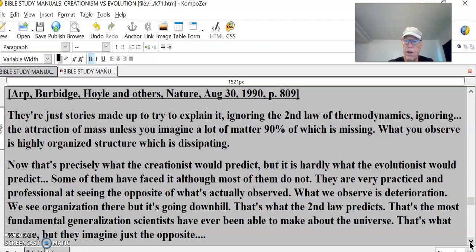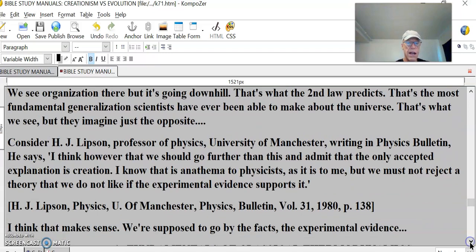That's precisely what the creationists would predict, but it is hardly what the evolutionists would predict. Some of them have faced it, although most of them do not. They are very practiced and professional at seeing the opposite of what's actually observed. What we observe is deterioration. We see organization there, but it's going downhill. That's what the second law predicts. That's the most fundamental generalization scientists have ever been able to make about the universe. That's what we see, but they imagine just the opposite. Consider H.J. Lipson, professor of physics, University of Manchester, writing in Physics Bulletin. He says, I think however that we should go further than this and admit that the only accepted explanation is creation. I know that is anathema to physicists as it is to me. But we must not reject the theory that we do not like if the experimental evidence supports it.